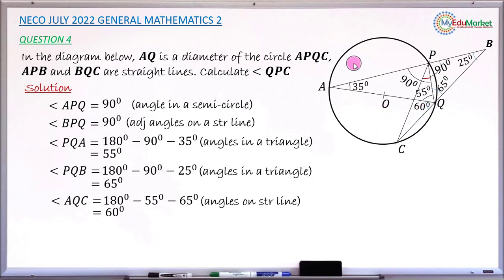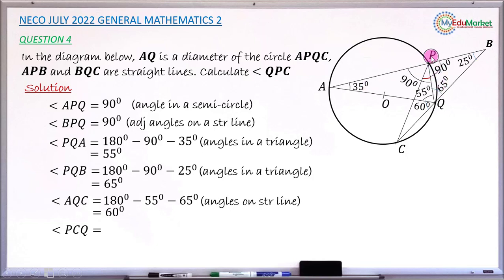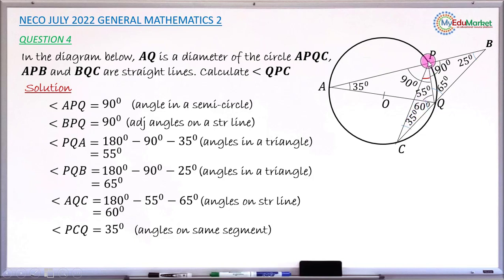Next, I need to find angle PCQ. Arc PQ subtends angle 35° at the remaining circumference. The same arc PQ also subtends angle PCQ. By the theorem, angles subtended by the same arc on the same segment are equal, so angle PCQ is also 35 degrees.